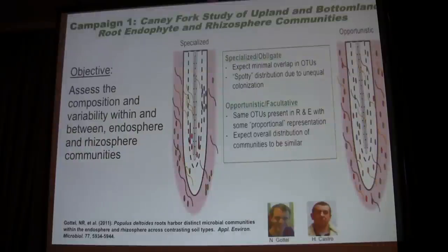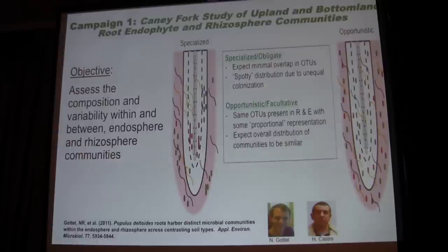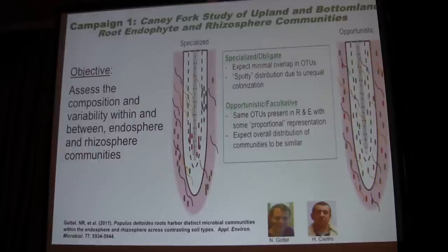Our first campaign was really focused on the endosphere of the root — the microbes living within the root. There have been several theories about how those organisms get there beyond the rhizobia. Some folks think these may be specialized or obligate relationships, while others suggest they may be very opportunistic — organisms that got trapped accidentally in the root as it grows through the soil, where some persist and some don't. These two views would set up different types of patterns we might expect to see within the root microbial community.